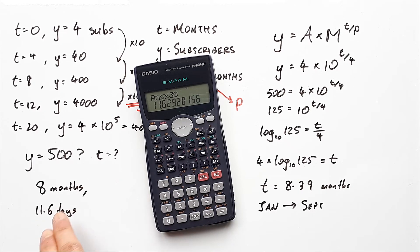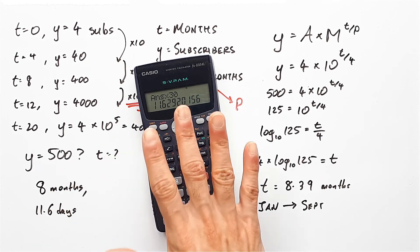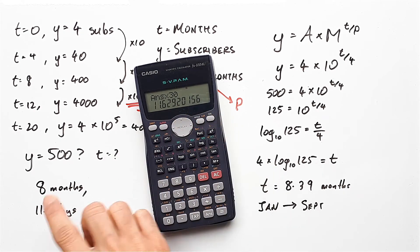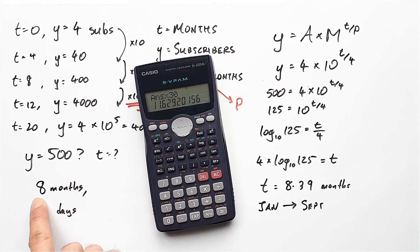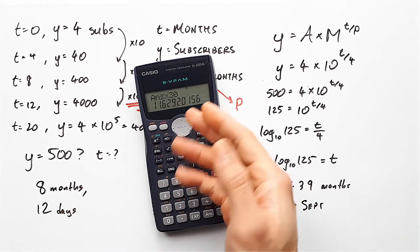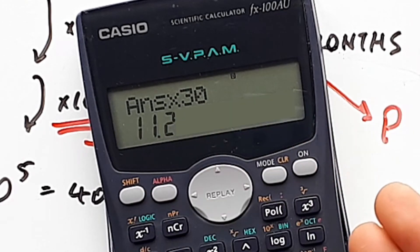But if we wanted to round it to the nearest day, the correct way to round this is to round up, not because it's 0.6, but because you can't hit 500 subscribers if you just wait till 11 days. It needs to be at least 11.6. So this does need to round up either way and say 12 days. Even if it said something like 11.2 days, you still need to round it up because you can't hit 500 until you go past 11.2.